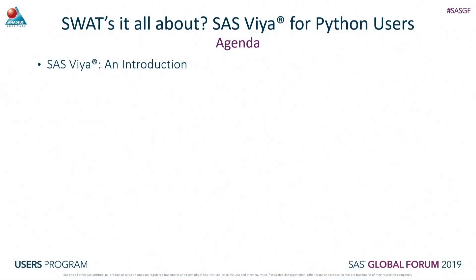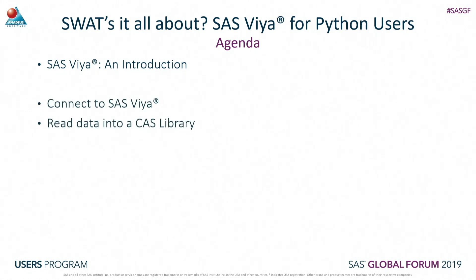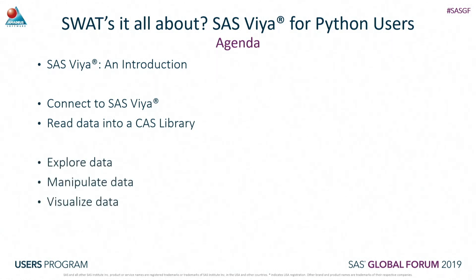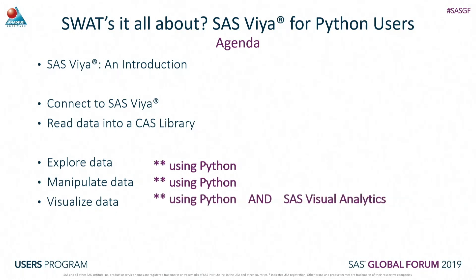We'll start off with a brief introduction to SAS Viya, then move on to connecting to SAS Viya via Python, and read some data into a CAS library. Once we've done this, we'll look at exploring our data, manipulating our data, and finally visualizing our data using Python code and also using different tools available within SAS Viya, such as SAS Visual Analytics.